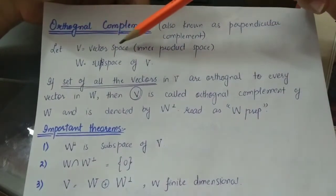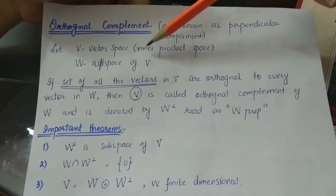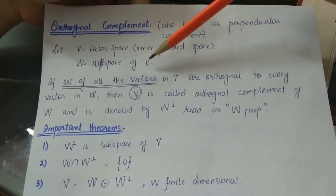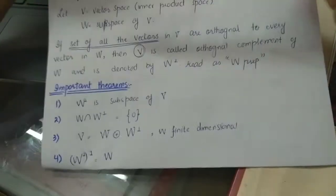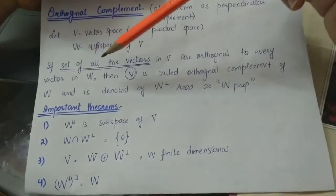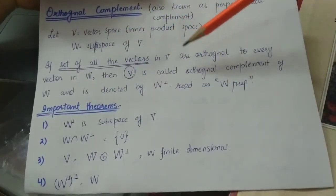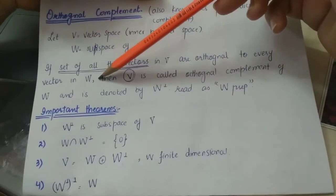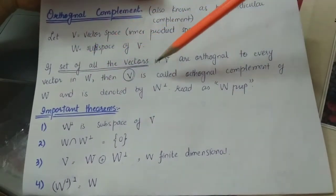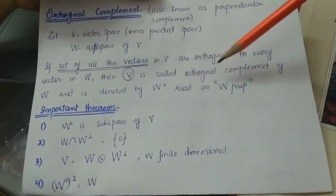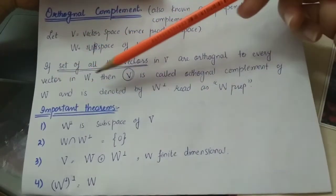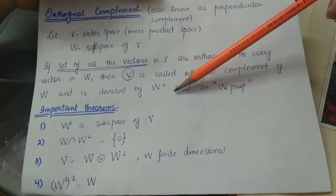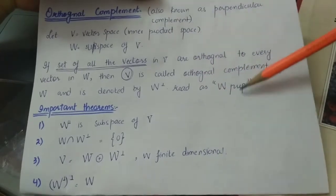Let V be a vector space, specifically an inner product space, and let W be a subspace of V. If the set of all vectors in V are orthogonal to every vector in W, then V is called the orthogonal complement of W, denoted by W with a perpendicular sign on top, read as W-perp.